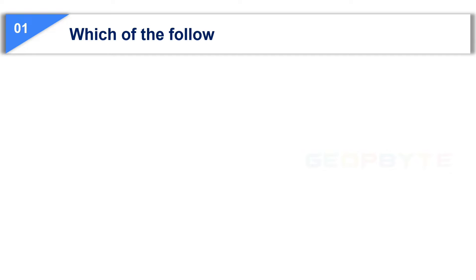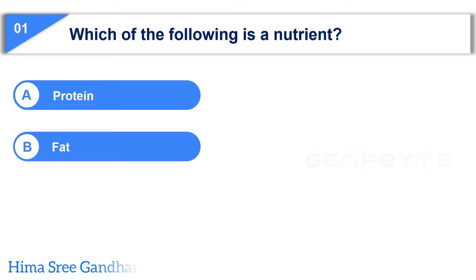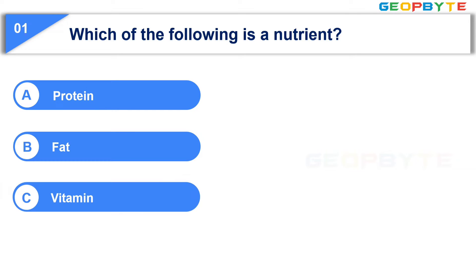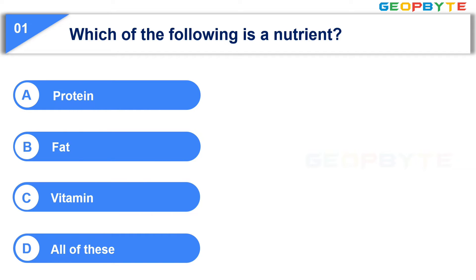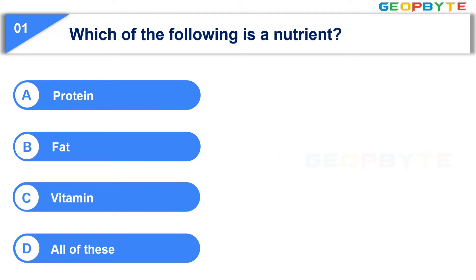The first question is: Which of the following is a nutrient? Option A: Protein. Option B: Fat. Option C: Vitamin. Option D: All of these. Your time starts now. Your time is up and the correct answer is Option D: All of these — that is protein, fat, and vitamin.